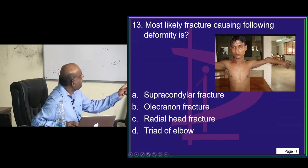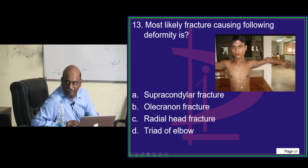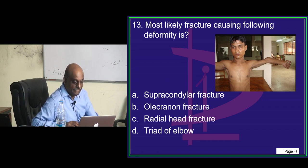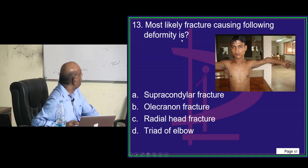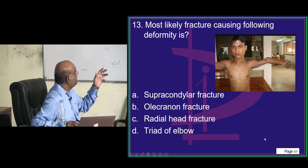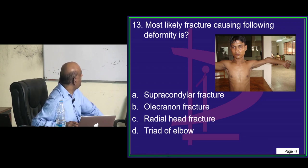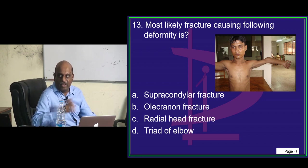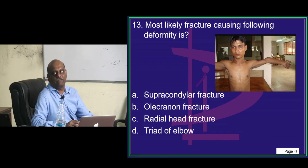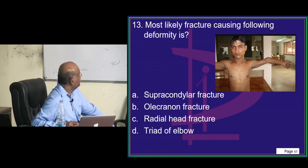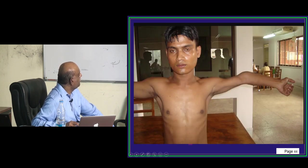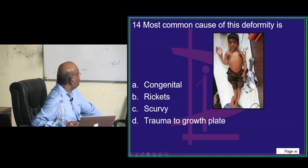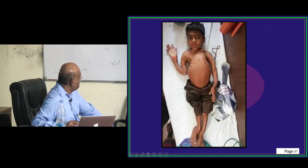What is the most likely fracture causing this deformity? Tension band wiring confirmed correct. Ritu Raj, Roshan, and Amrita all say gunstock deformity, which is seen in supracondylar fracture of the humerus. That is correct.